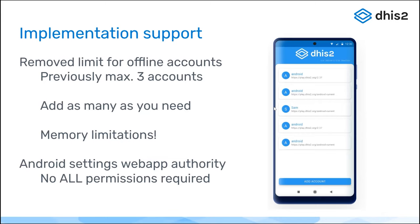The other improvement, which was a strong request from the community, is that the Android Settings Web App — used for configuring appearance, analytics, and setting parameters — no longer requires the 'all' permission. Previously, the user configuring Android settings needed the 'all' authority, which gives far more permissions than required since 'all' allows you to do absolutely everything on the server configuration. Since version 40, the Android Settings Web App has its own specific authority that grants access only to that application's information.